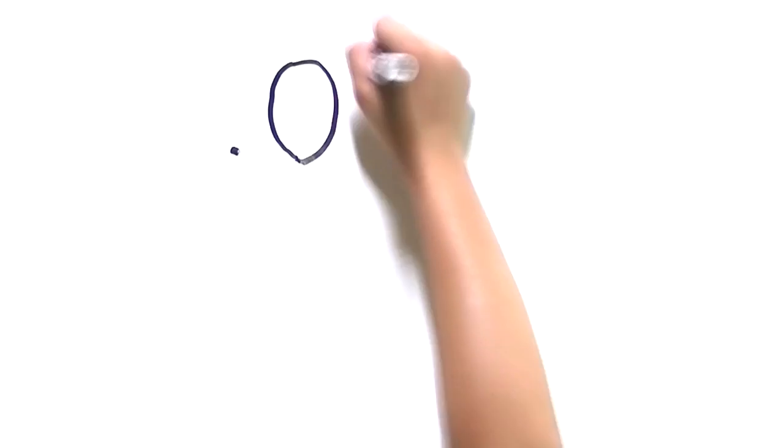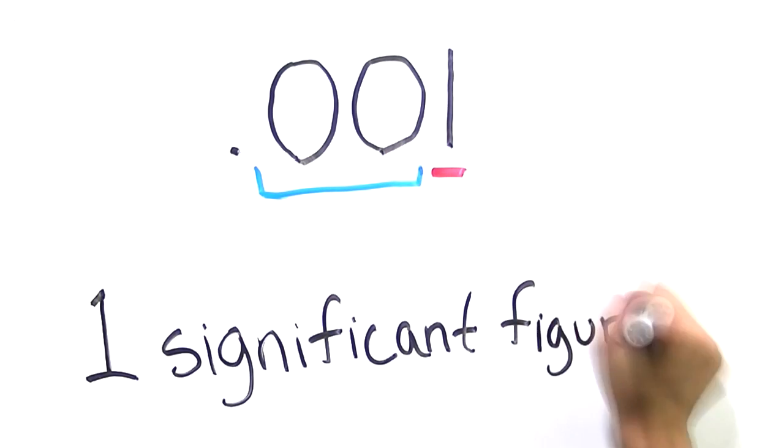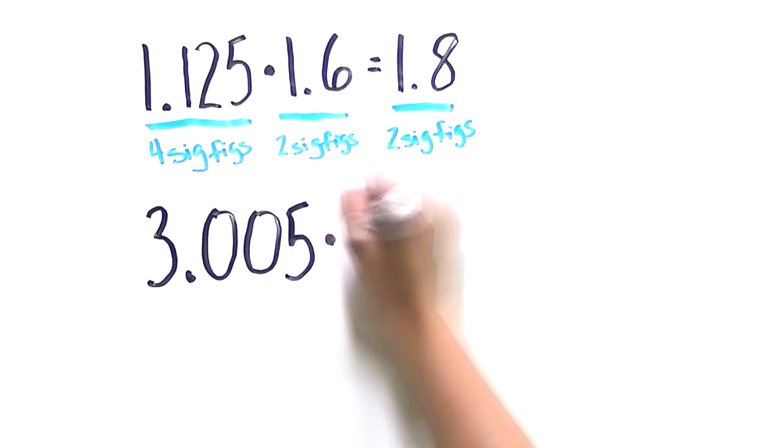However, the zeros in .001 don't count. If numbers are multiplied or divided, their answer is taken to the least amount of significant figures that the numbers in the expression has.